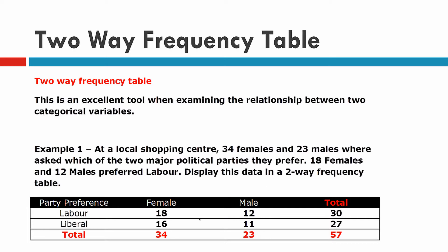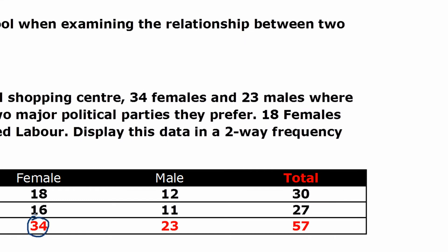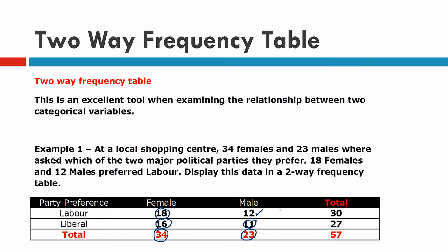Since there were 34 females and 18 of them preferred Labour, then 16 of those females preferred Liberal. So we can work out that 16 quite easily. The same for the males — there were 23 males, and out of those 23, 12 preferred Labour, which means that 11 of them preferred Liberal. We can put our totals on the side: Labour has 30, Liberal has 27, and a total overall of 57.